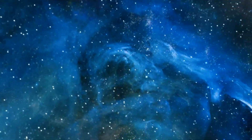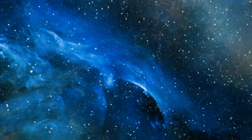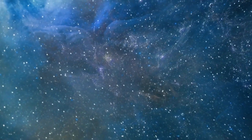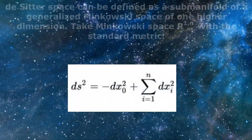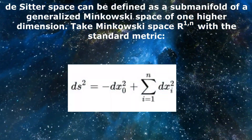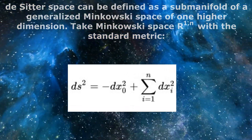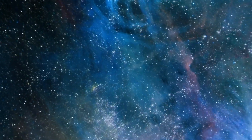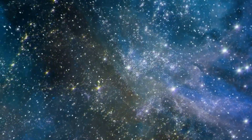De Sitter Space is a solution to the equations of Einstein's theory of general relativity that describes a universe with a positive cosmological constant, which is a term in the equations that represents the energy density of the vacuum of space. In this space, the expansion of the universe is accelerating, as if there is a repulsive force pushing everything apart.